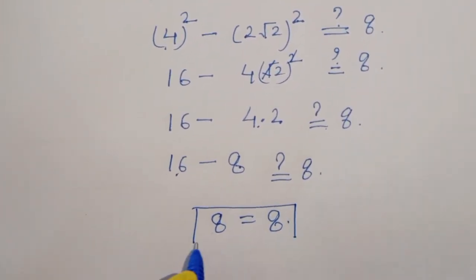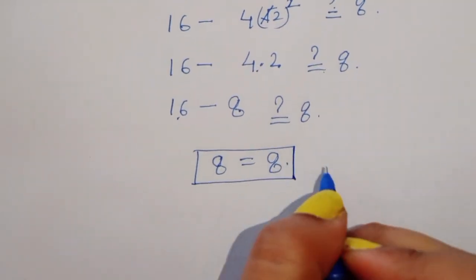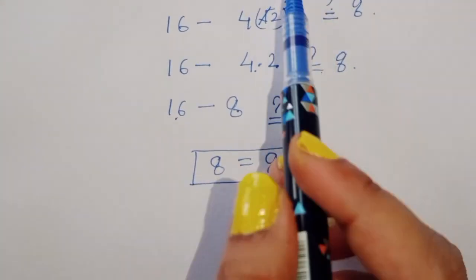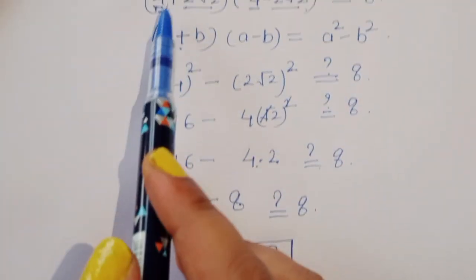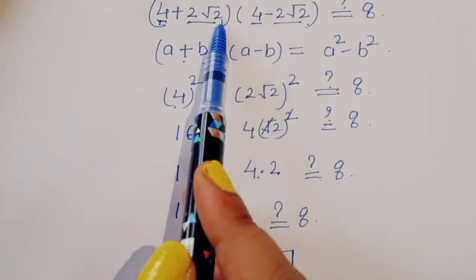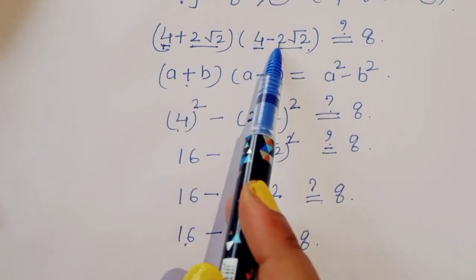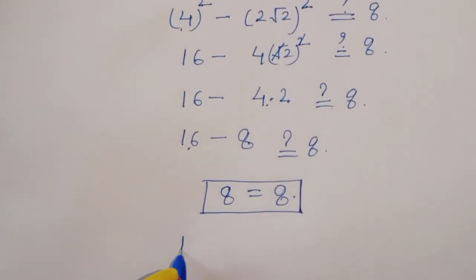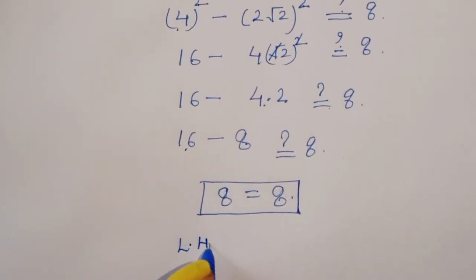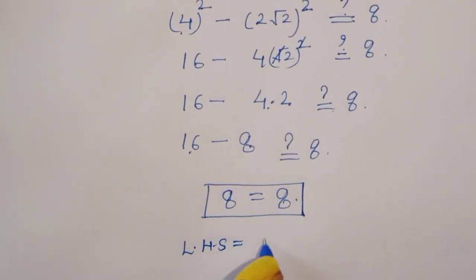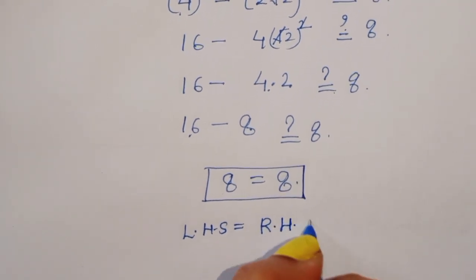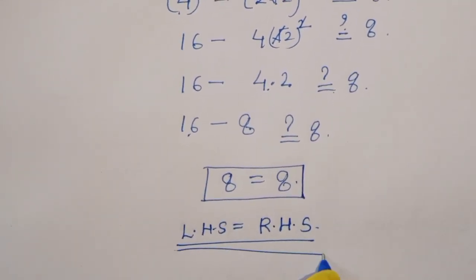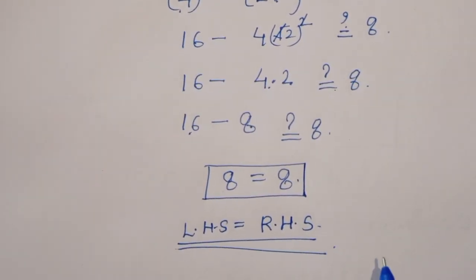So by the second equation it is also verified: with x equal to 4 plus 2 root 2 and y equal to 4 minus 2 root 2, LHS is equal to RHS. Thank you.